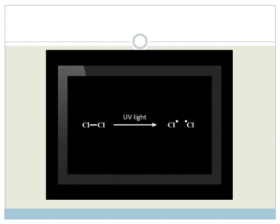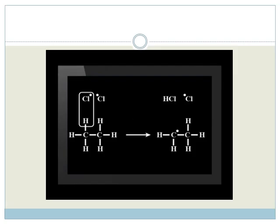When ultraviolet light, or UV, is used, the chlorine atoms break apart. This makes it easier for them to replace one of the hydrogen atoms and make hydrogen chloride as one product.